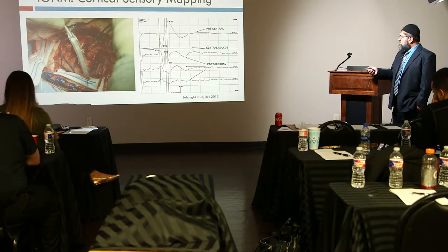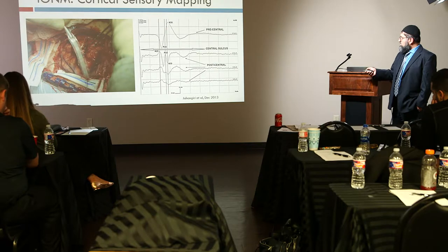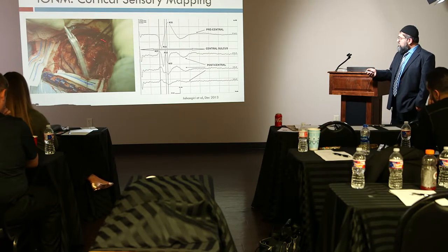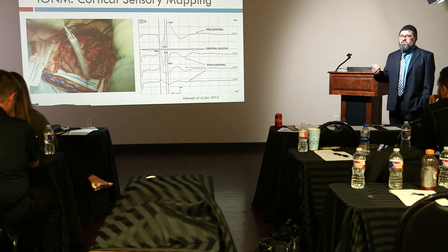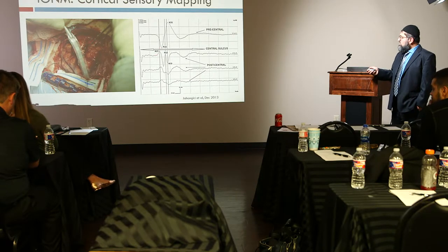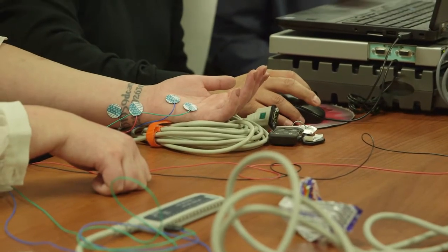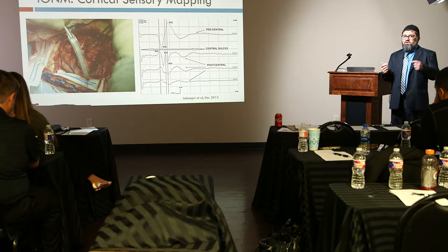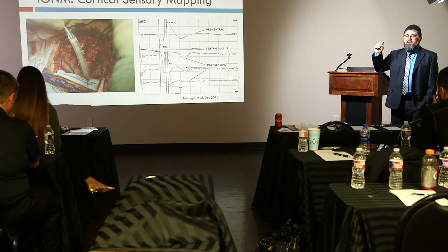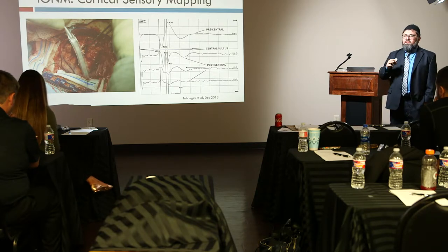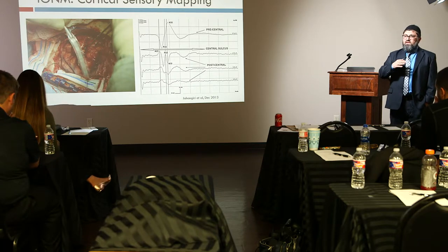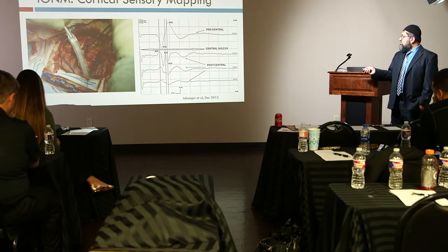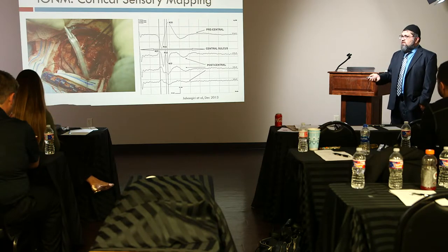We wrote a paper from UVA in 2011 about the P25 response. This is an extra response produced only on the somatosensory gyrus in the hand area. If you get a P25 response, the grid is right on the hand area. You can place the grid anywhere on the central sulcus and get a phase reversal — that doesn't mean you're on the hand area. The central sulcus is five to six centimeters long. When the grid is close to the hand area, you'll see the P25. N20 and P30 are tangential responses; P25 is radial to those.